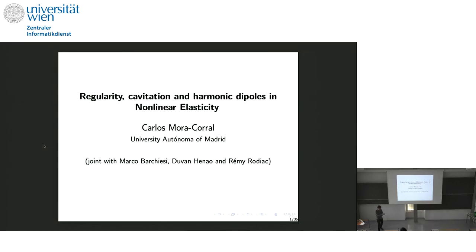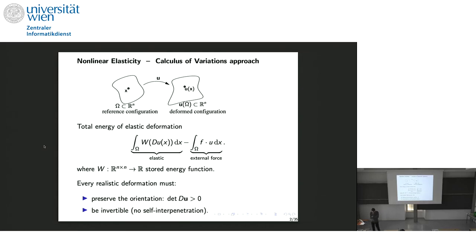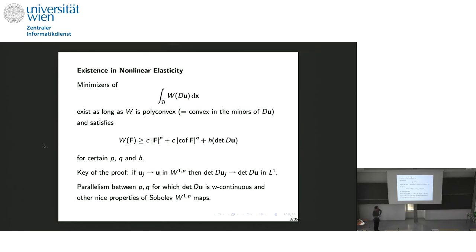This is the standard setting in nonlinear elasticity: we have the body, the reference configuration, the deformed configuration, the deformation, and the energy of the deformation. Forces don't play a role in this talk. It is essential to preserve the orientation and to be invertible. The usual setting to prove existence is based on polyconvexity of the energy and coercivity — we need coercivity for the gradient, for the cofactors, and for the determinant.